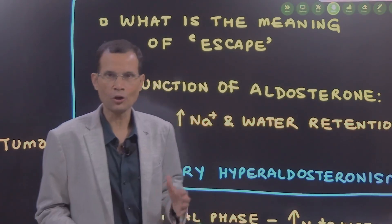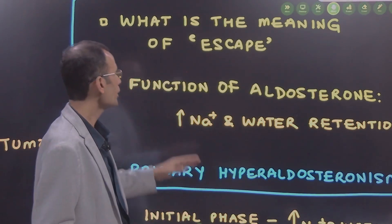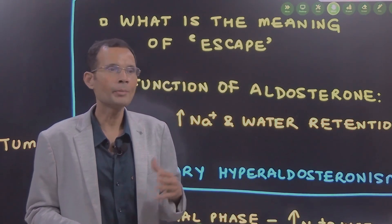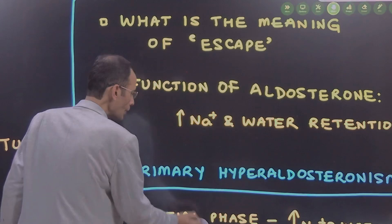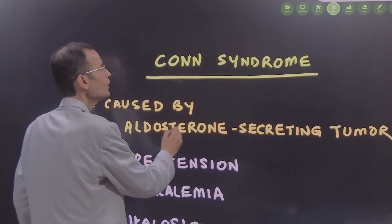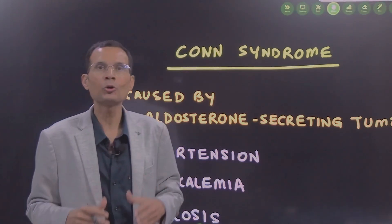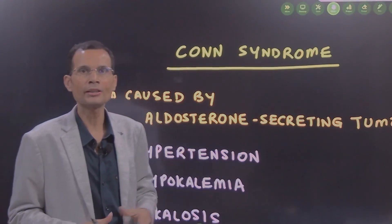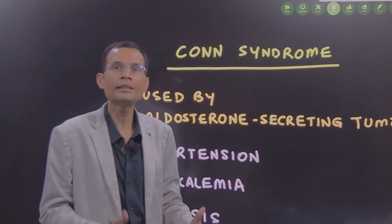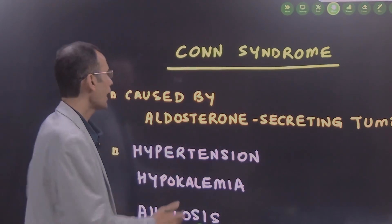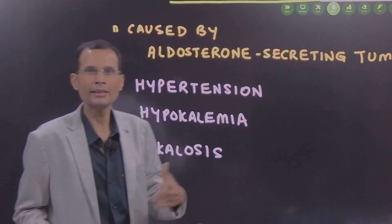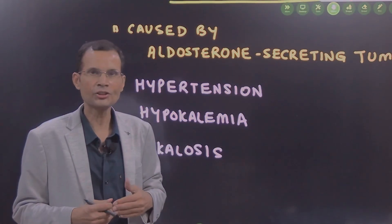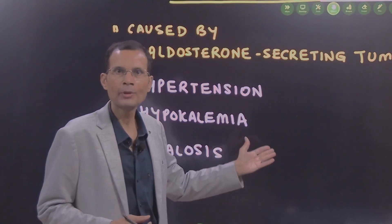The function of aldosterone normally is to increase sodium and water retention from various places in the body, but mainly from the collecting duct in the kidneys. Now, there is a condition called Conn syndrome, primary hyperaldosteronism. There is a tumor which is the aldosterone-secreting tumor in the adrenal cortex gland. It secretes excessive aldosterone, and consistently high levels of aldosterone would result in hypertension because increased sodium and water retention will cause high blood pressure.